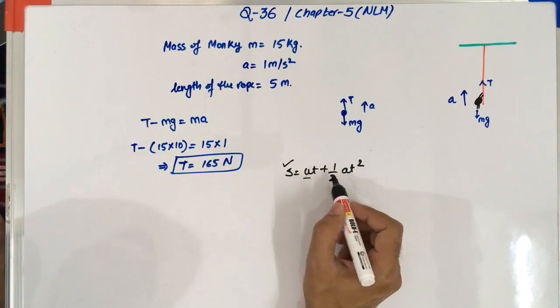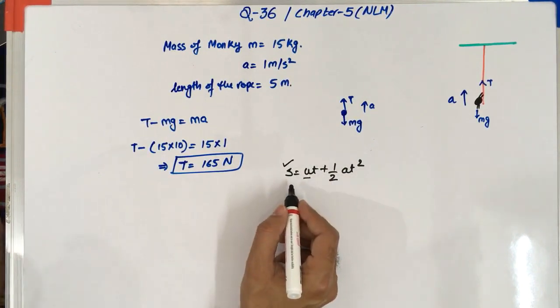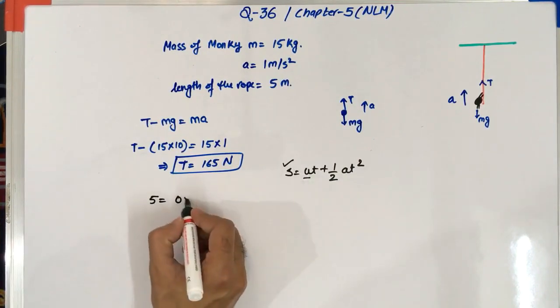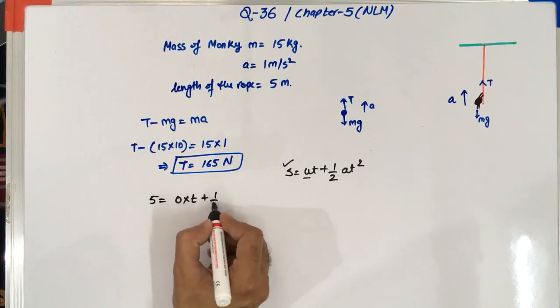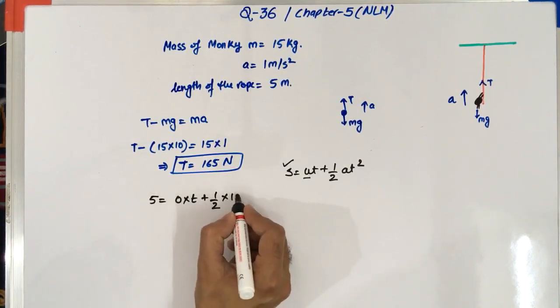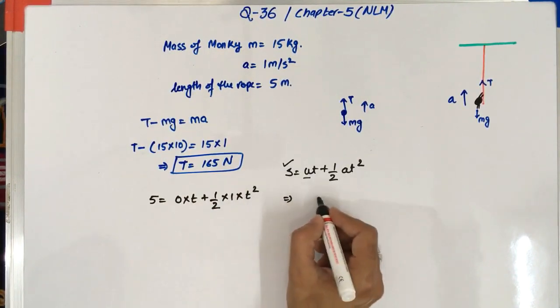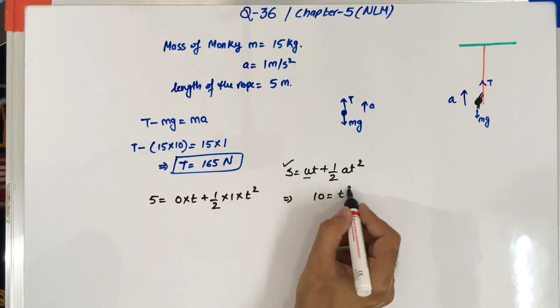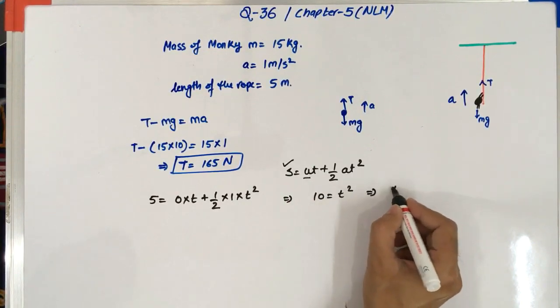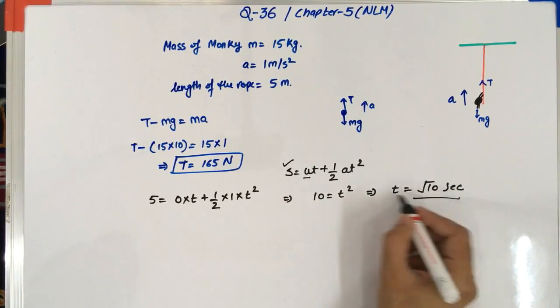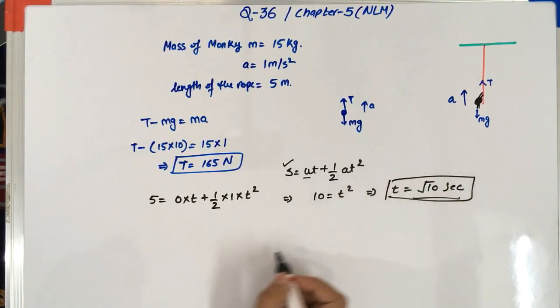So after feeding this value into this equation, this is going to be 5 is equal to 0 is the initial velocity into T plus half of acceleration is 1 into T square. So this will become 10 is equal to T square that means T is equal to under root 10 seconds. So this is the solution of this problem.